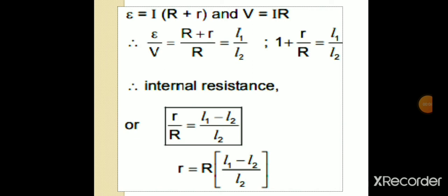We have discussed that EMF is equivalent to I into R plus r, and potential difference V is equivalent to IR, from which we get internal resistance small r is equivalent to capital R into L1 minus L2 divided by L2. This is the equation for internal resistance of a cell.